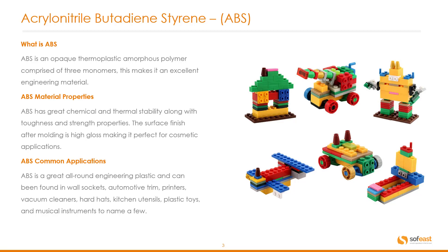Let's start with ABS. ABS is an opaque thermoplastic amorphous polymer comprised of three monomers, making it an excellent engineering material. ABS has great chemical and thermal stability along with toughness and strength properties.